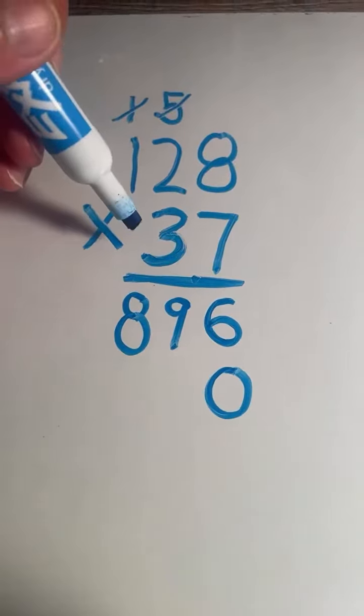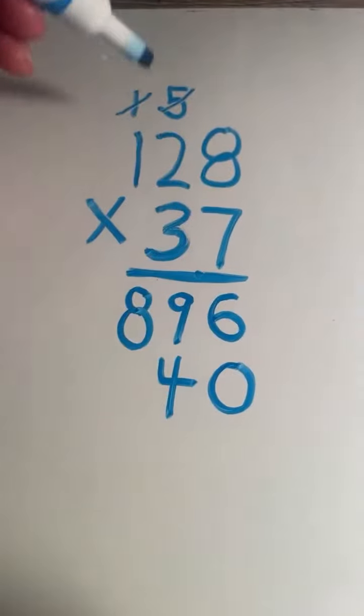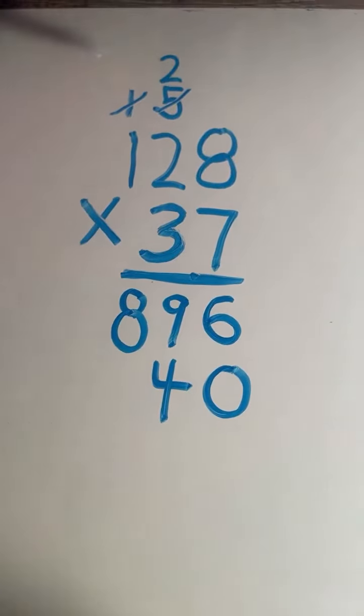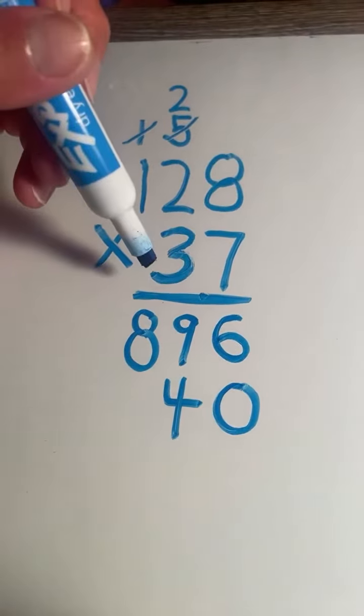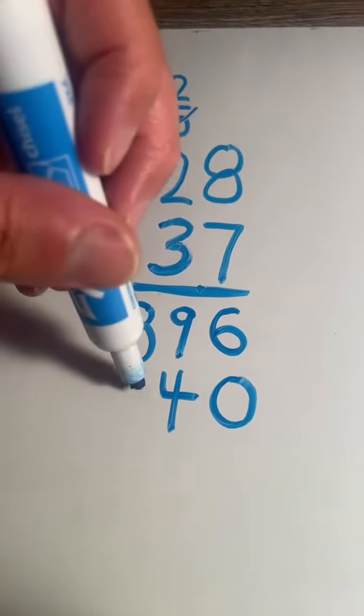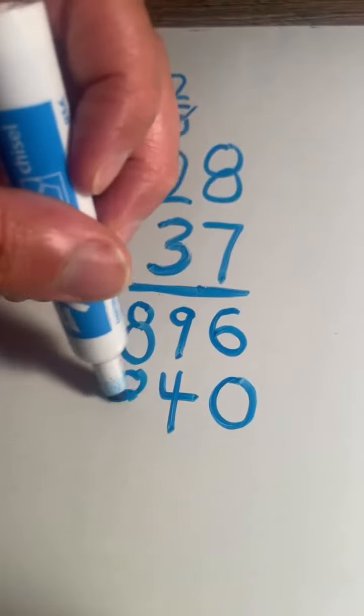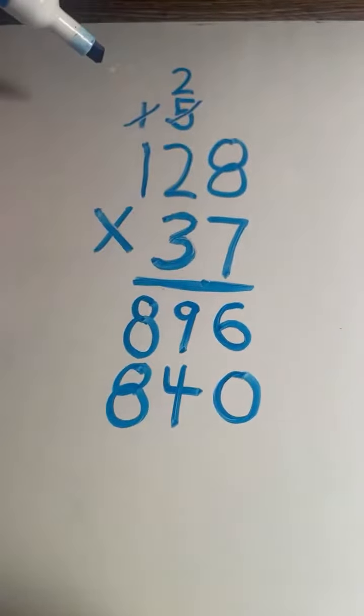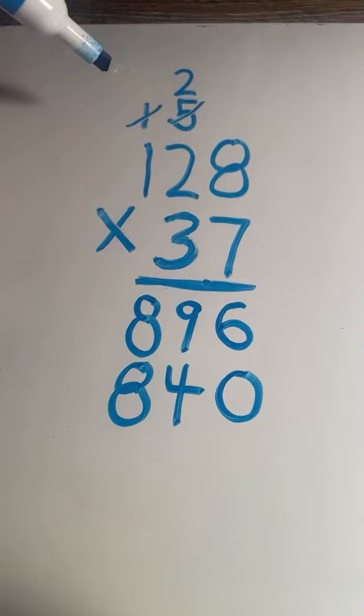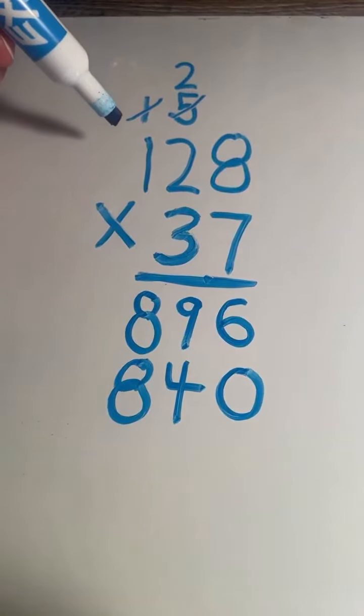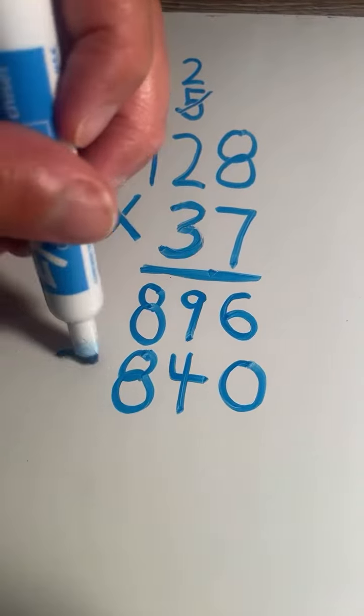8 times 3 equals 24, 4 carry the 2. 2 times 3 equals 6, plus 2 equals 8. 1 times 3 equals 3.